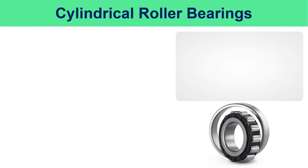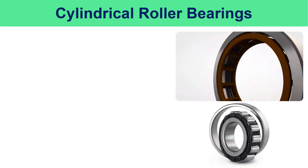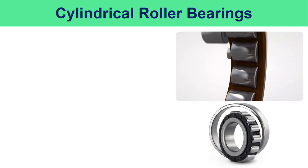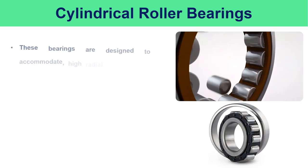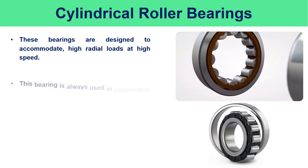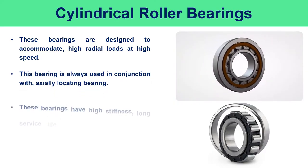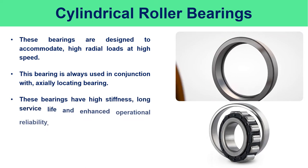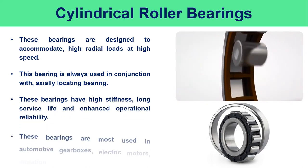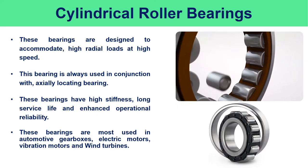Cylindrical roller bearings consist of a flanged outer ring, a separating cage, a number of rollers, and a floating inner race. These bearings are designed to accommodate high radial loads at high speed, always used in conjunction with an axially locating bearing. They have high stiffness, long service life, and enhanced operational reliability. Cylindrical roller bearings are most used in automotive gearboxes, electric motors, vibration motors, and wind turbines.